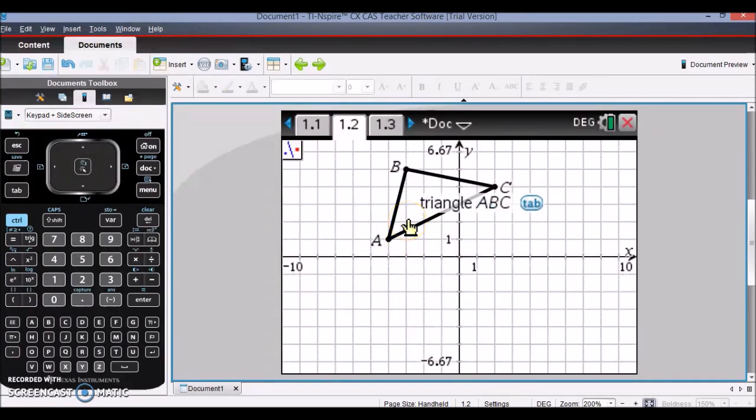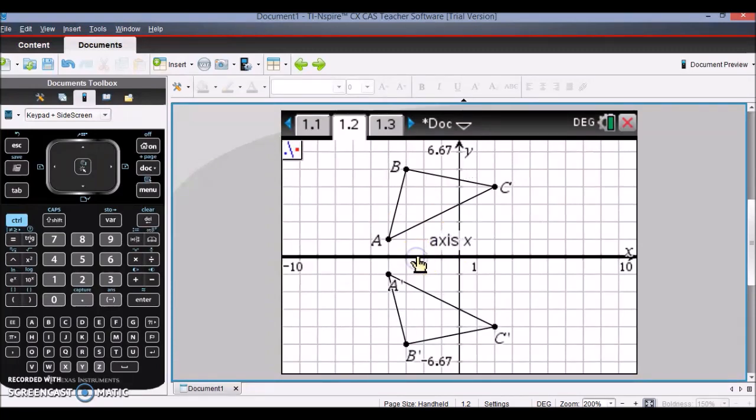And I need to select my object and then select the line that I want to reflect over. So that could be the y-axis. It could be the x-axis. It also shows me a preview of where that's going to be, and it also provides me with prime notation.